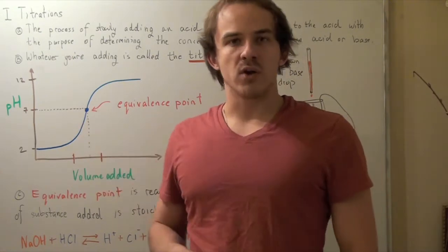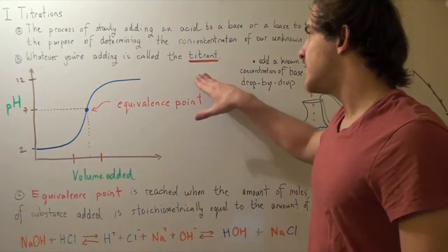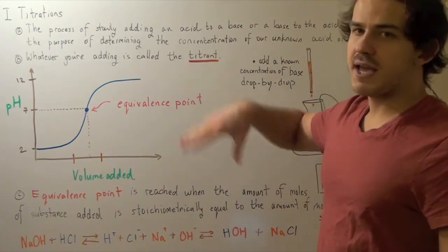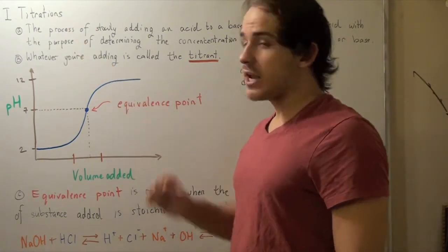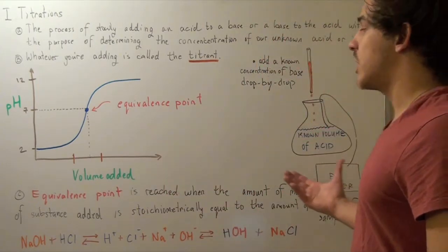Whatever we're adding to our unknown sample is called a titrant, and a titrant could be either a base or an acid. Let's illustrate titration using a picture and then a graph.